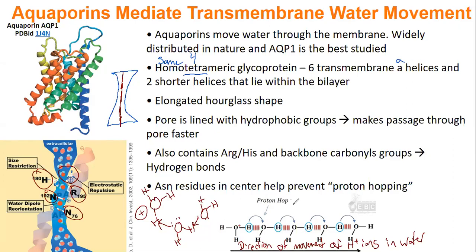Bacteria cells especially need to keep a proton gradient for ATP synthesis. If there were a way for hydrogens to naturally re-enter the cell without going through ATP synthesis machinery, that would be very bad. To prevent this proton hopping in aquaporins, the asparagines separate the water molecules far enough apart so they can no longer proton hop, as shown in the diagram where water molecules are spaced to prevent it.